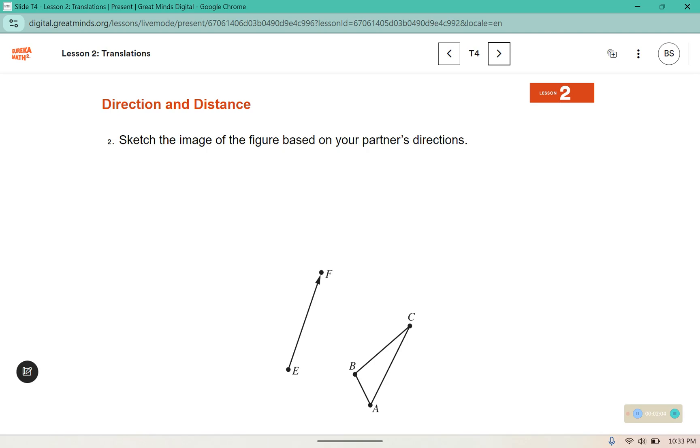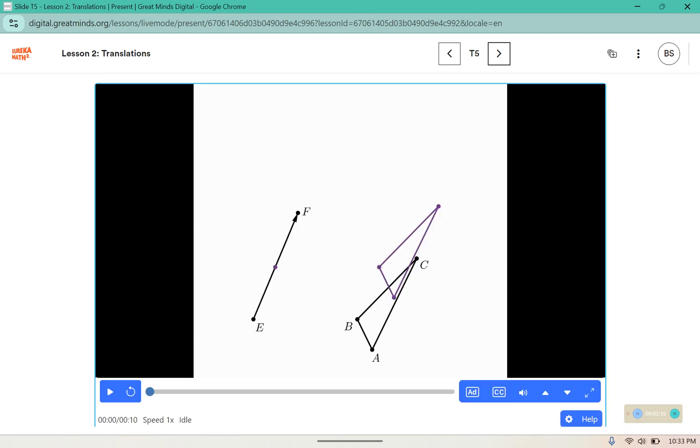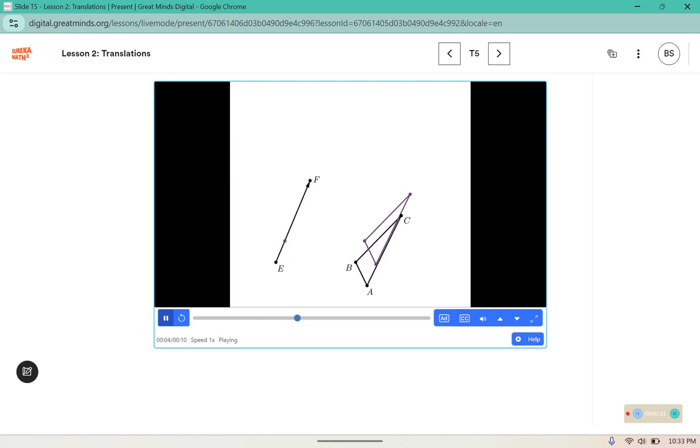For this one, it says sketch the image of the figure based on your partner's directions. So again, if you've already viewed the screen, maybe swap with the partner, so now they're looking at the screen, and describe how you would move to create the image. Which direction are you moving? How far?